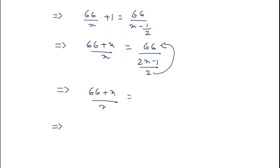Now cross multiply the terms. 66 plus x into 2x minus 1 is equal to 66 into 2, is 132x. After multiplying it with x.